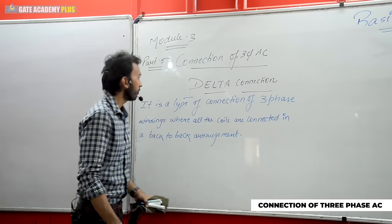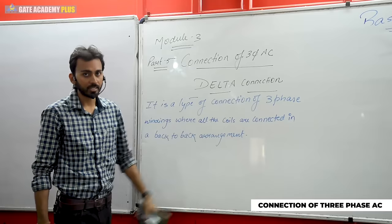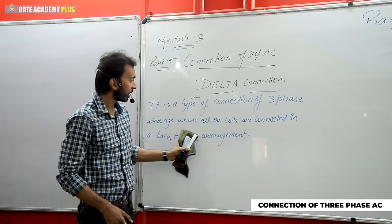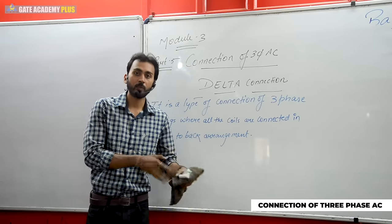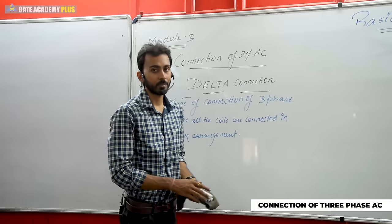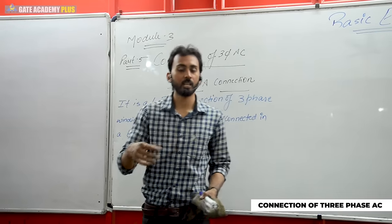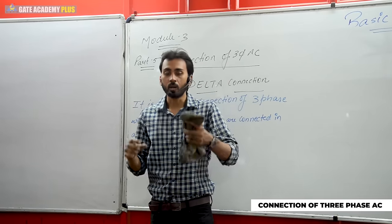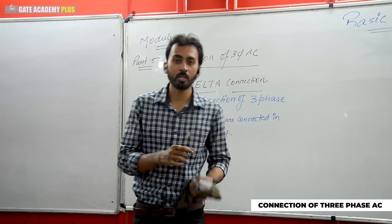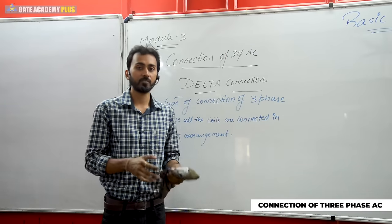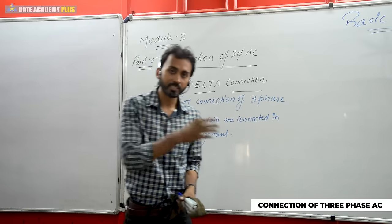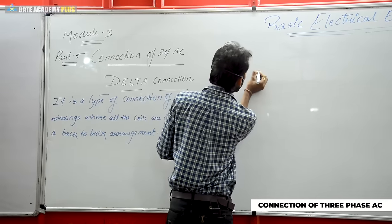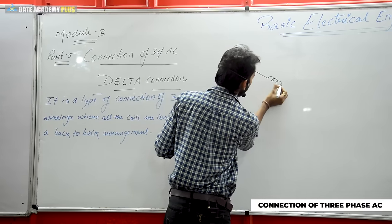Let me write a statement here. For a connection of three-phase balance system in delta connection: delta connection is a type of connection of three-phase windings where all the coils are connected in a back-to-back arrangement. When you have three different sets of conductors and three different types of load — or if expressing the generator, three types of winding coils — connecting those three coils in back-to-back arrangement gives a balanced three-phase delta connected system.